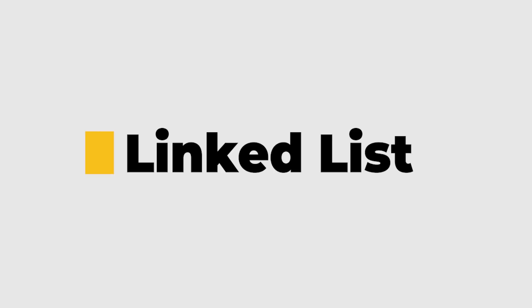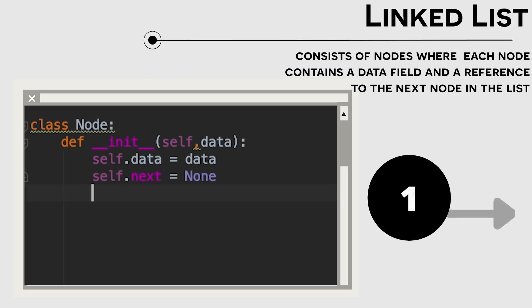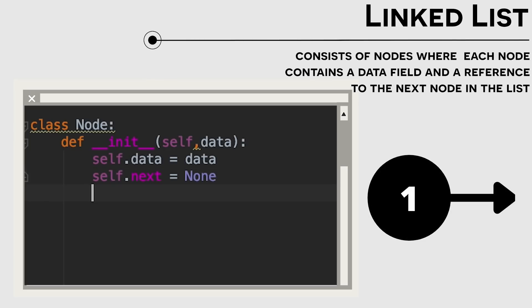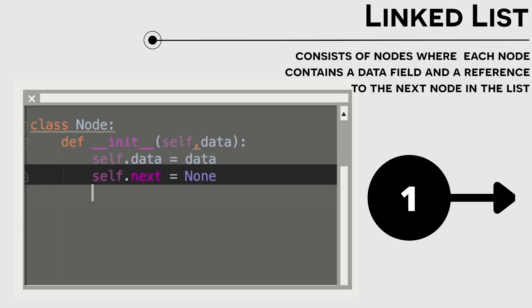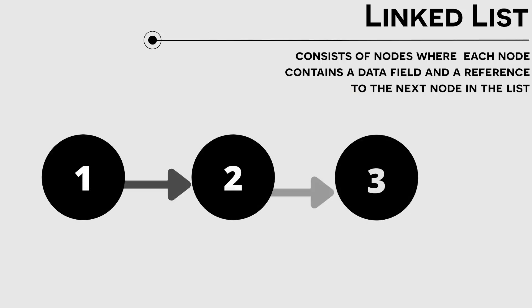The next most common data structure that you're going to see but mostly during the interview process is a linked list. A linked list is where we have a node and that node usually stores data. For example, it could store a number value. And those nodes also have pointers.